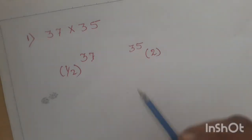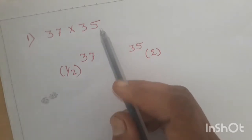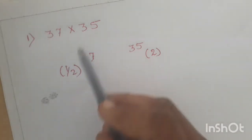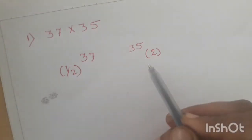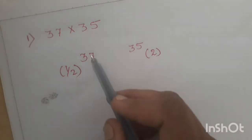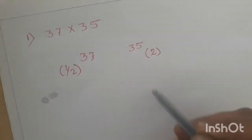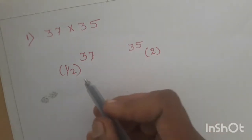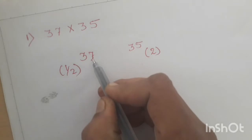The question given here is to multiply 37 into 35. First, you need to choose any one of the factors to make it half and the other factor you are going to make it double. Suppose I choose 37 to make it half — this column I will use to make it double.